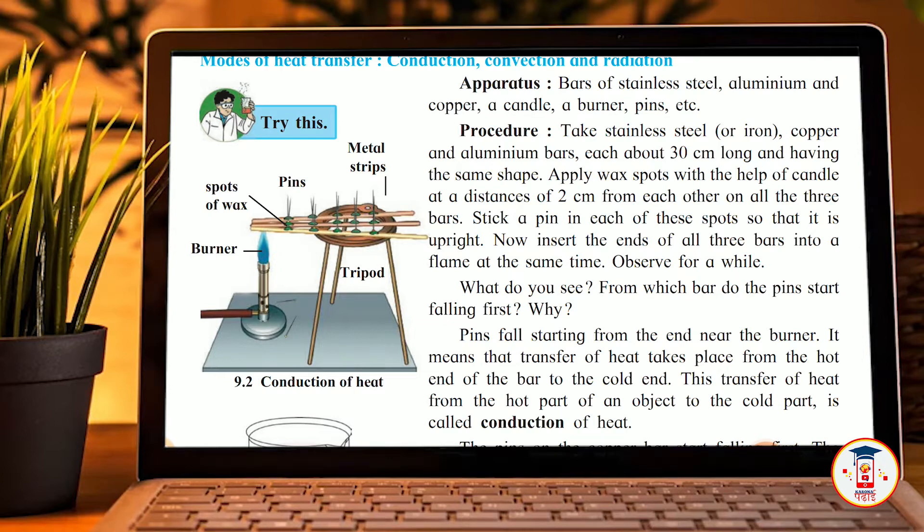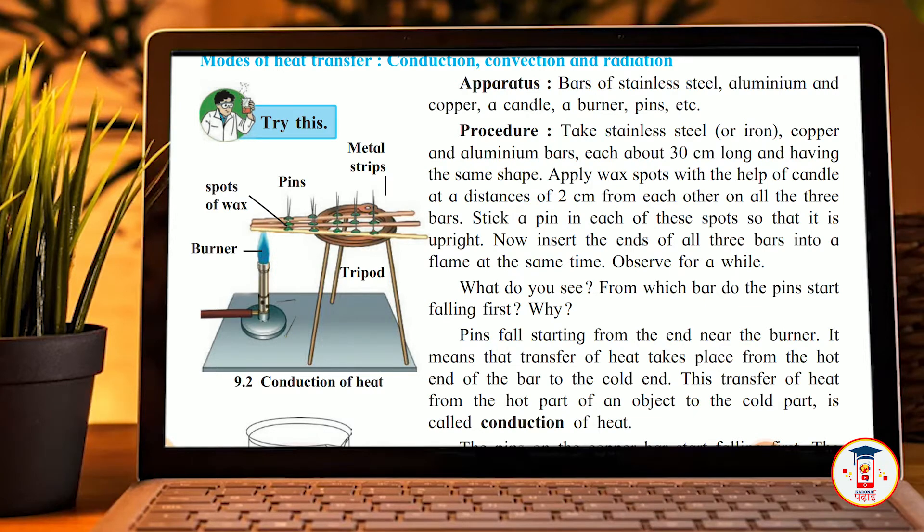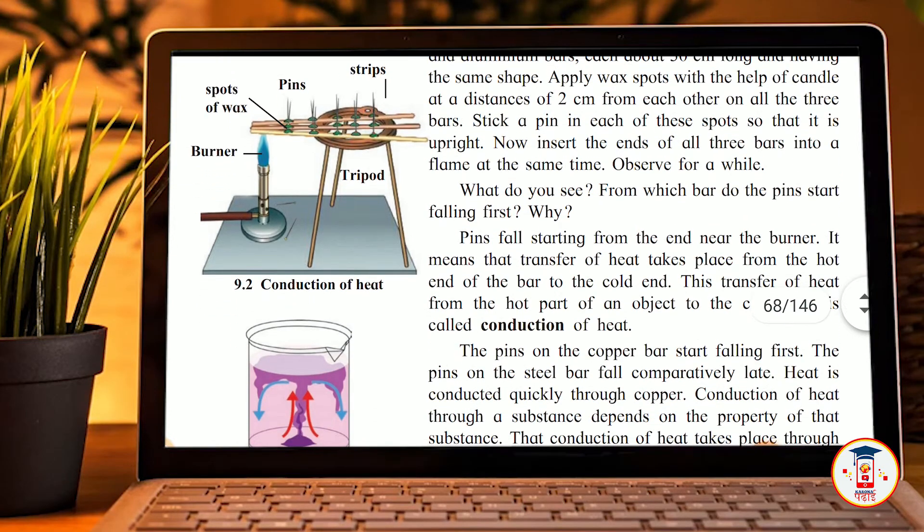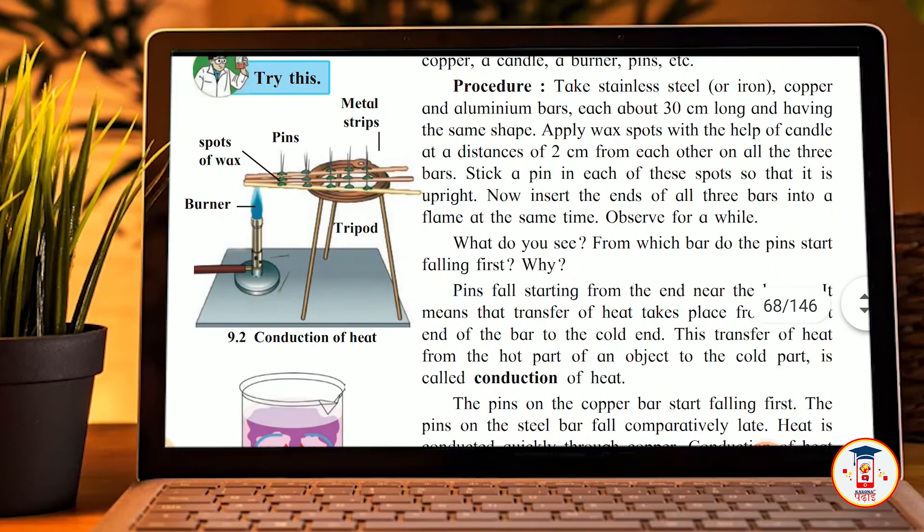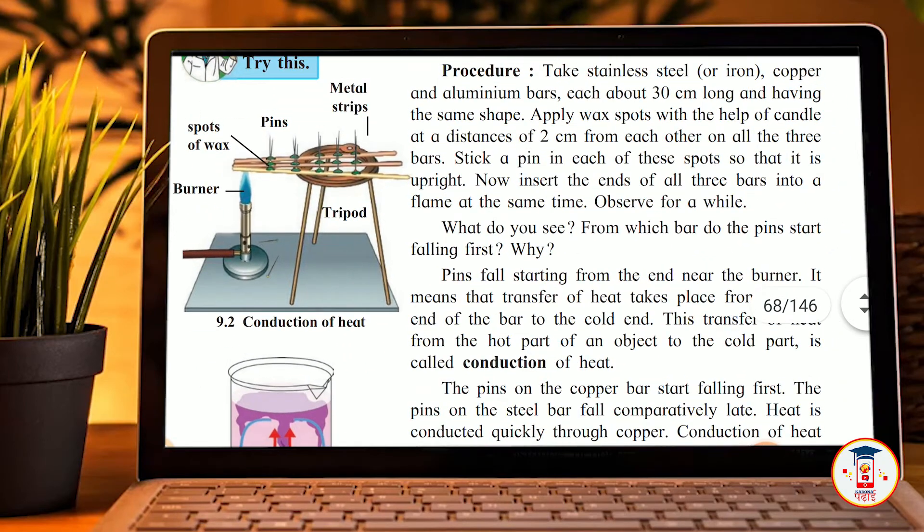Now you have to put pins spotted with wax through the three sticks. Pins fall starting from the end near the burner. It means that transfer of heat takes place from the hot end of the bar to the cold end. This transfer of heat from the hot part of an object to the cold part is called the conduction of heat.